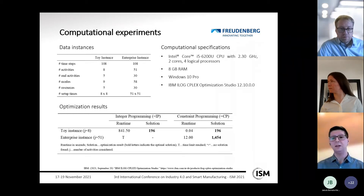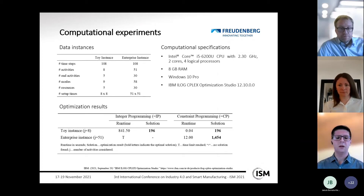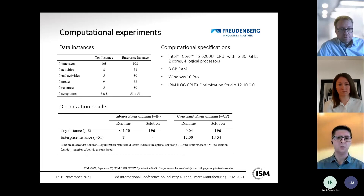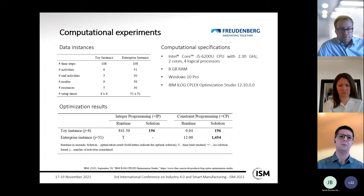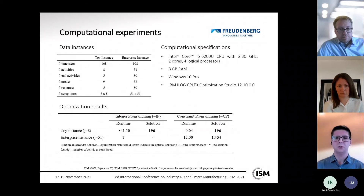An enterprise instance was also developed, reflecting the company partner's day-to-day planning volume on a one-week hourly timeline. It includes 51 activities, 30 end activities, 58 modes, 30 resources, and a setup time matrix of 51 by 51 — approximately six times the size of the toy instance in terms of orders and resources. Experiments were run on a personal computer with an Intel Core i5 CPU at 2.3 GHz, 2 cores, 4 logical processors, and 8 GB RAM.